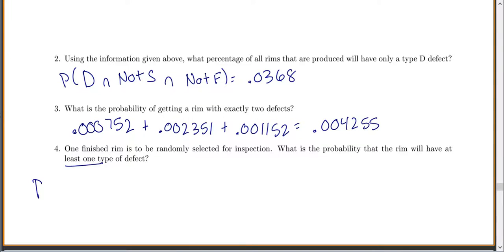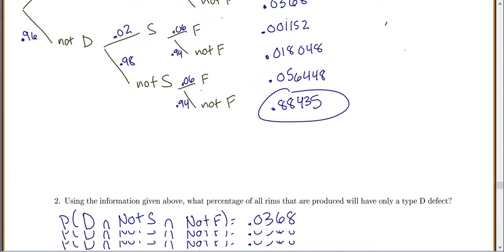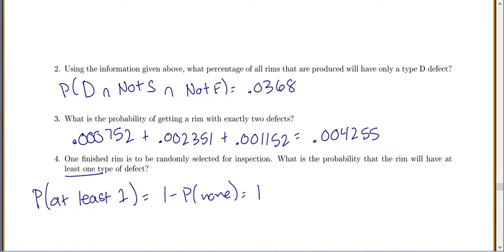Or we could use the complement rule. The probability of at least one is one minus the probability of none. If you look back up, which one has no defects? It would only be this bottom one. So one minus our 0.88435 equals 0.11565, about an 11.5% chance of at least one defect.